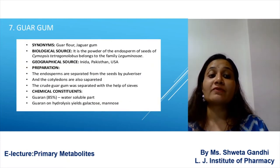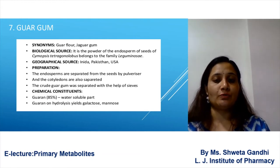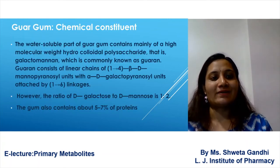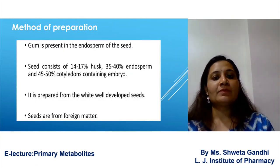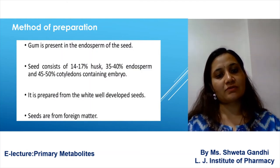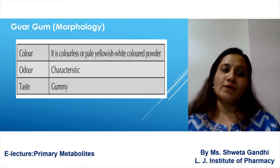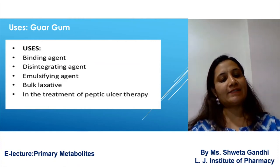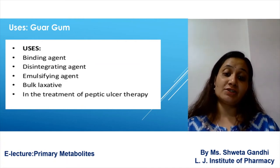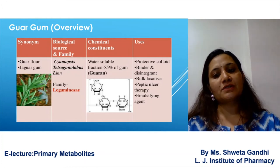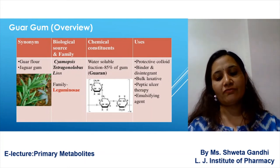Next is guar gum, obtained from the seeds of Cyamopsis tetragonolobus, family Leguminosae. Guaranine is the main constituent. The high molecular weight polysaccharide galactomannan is present, and the seed contains 14 to 17% husk and 50% cotyledons. Uses of guar gum include as a binding agent, disintegrating agent, emulsifying agent, and it is also used in peptic ulcer therapies.